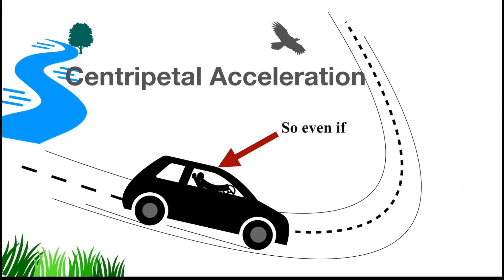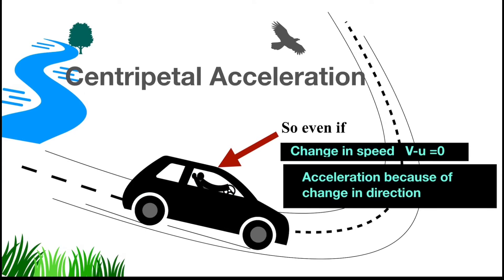So even if the change in speed is zero, still because of change in direction, you feel the acceleration. And this is known as centripetal acceleration. Now the question is, when there is no change in speed, only direction is changing, how can I find out this centripetal acceleration? One of the methods to do it is vectors.